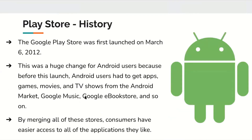The Google Play Store was first launched on March 6, 2012, a little bit after the Apple Store. It was a huge change for Android users because before this launch, Android users had to get apps, games, movies, and TV shows from multiple different places like the Android Market, Google Music, and the Google eBook Store. They essentially merged everything into one digital supermarket so you wouldn't have to access different apps to find content.